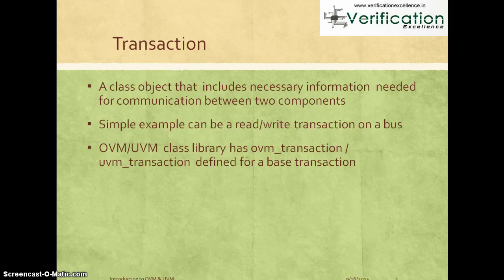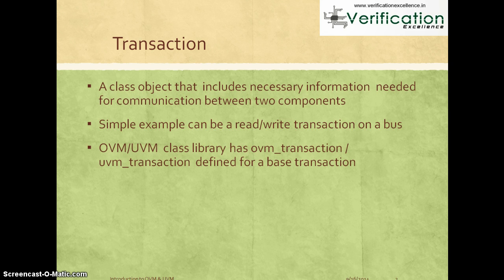We'll start with what is meant by a basic transaction. A transaction can be thought of as an abstract way of grouping all the information needed to communicate between two components. A simple definition: a transaction is like a class object that includes all the necessary information needed for communication between two components.